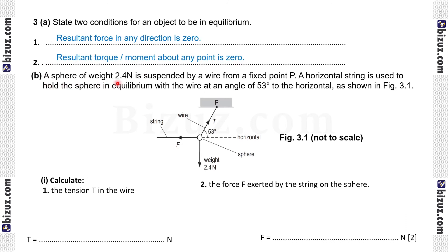3b, a sphere of weight 2.4 N is suspended by a wire from a fixed point P. A horizontal string is used to hold the sphere in equilibrium with the wire at an angle 53 degree to the horizontal which is shown in figure.